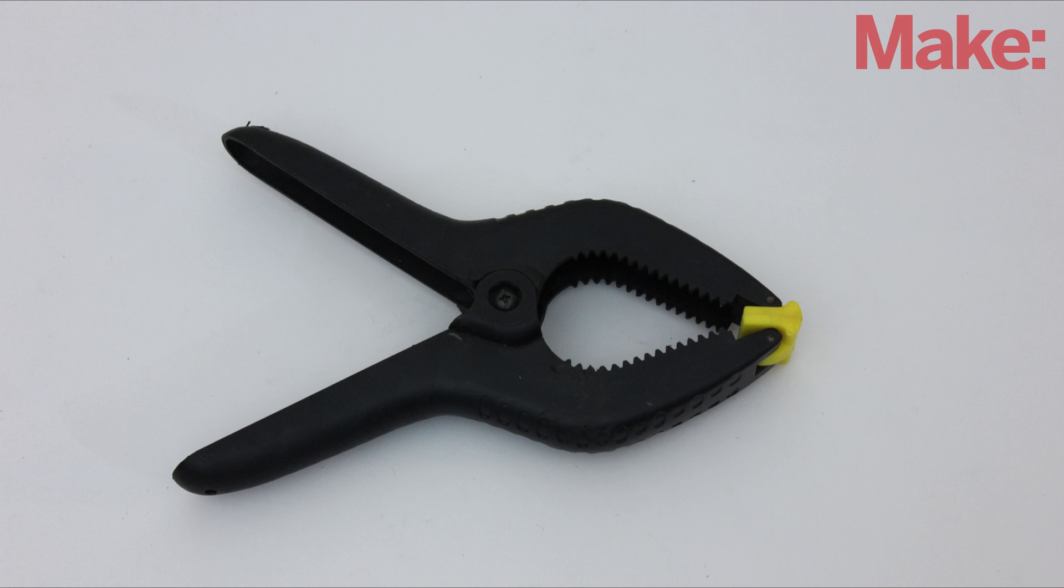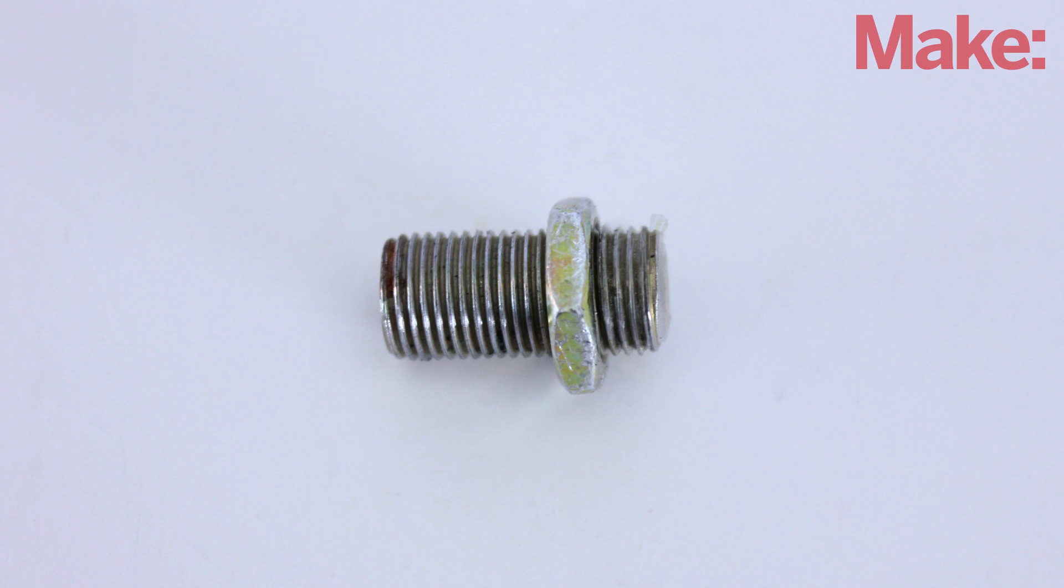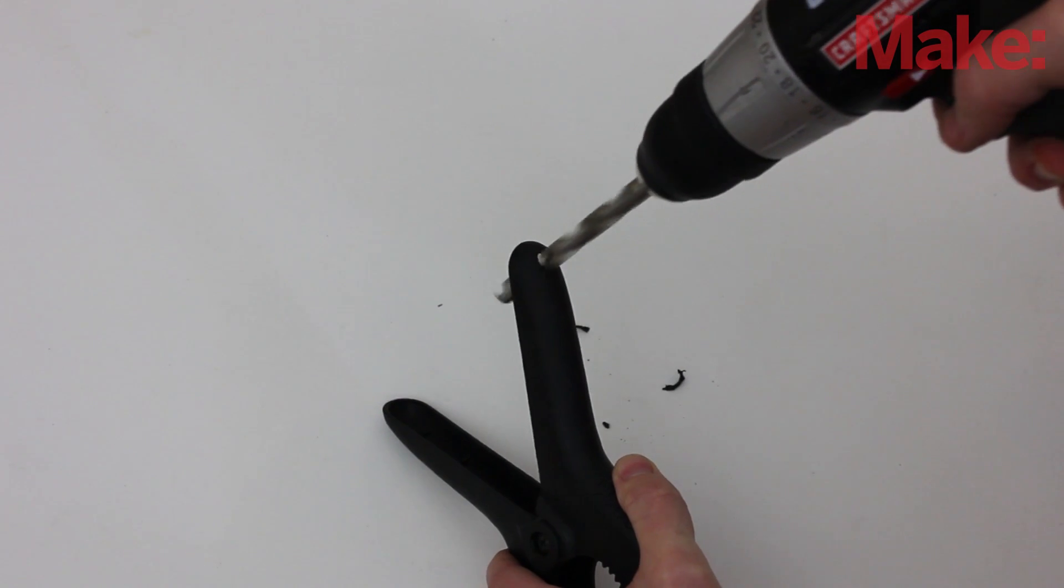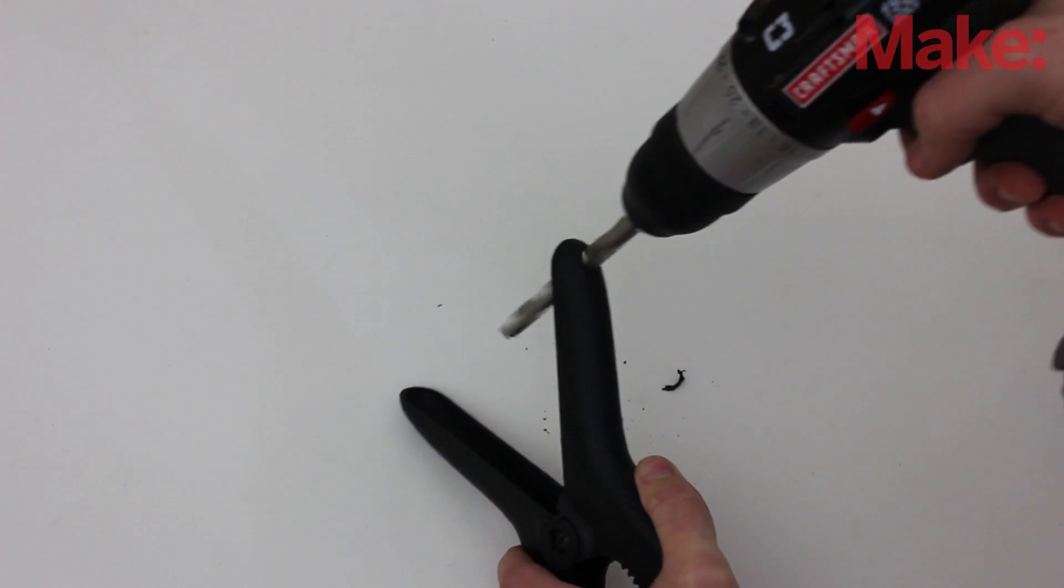Now you're ready to attach the clamps. To connect them to the arms of the lamp, I decided to reuse the mounting hardware that was holding the lights in place. So, I drilled a hole in each clamp that was the same size as the fitting.